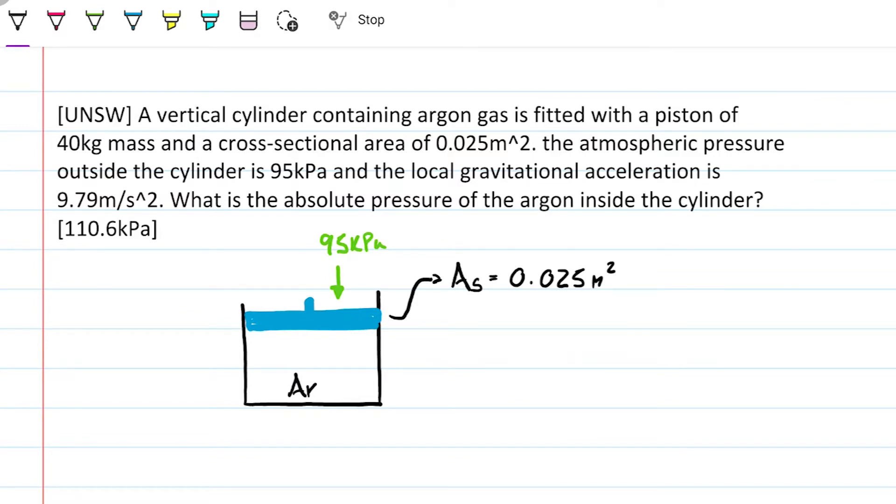And we know the mass of this is 40 kilograms. So if it's telling us the mass, we can be sure that's a reason because if there's a mass there, that means that we're going to be considering the weight of the piston. So the weight, we're going to have gravity pulling down on it and that's going to create the force weight.